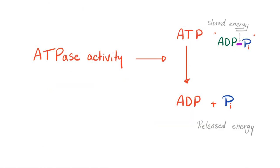What's the idea behind ATPase? ATPase is an enzyme that breaks down ATP into ADP and inorganic phosphate (Pi). The energy is stored in the bond between adenosine diphosphate and the third phosphate to make adenosine triphosphate. Once you break that bond, you release the stored energy.